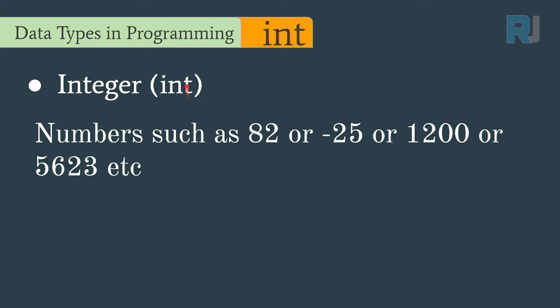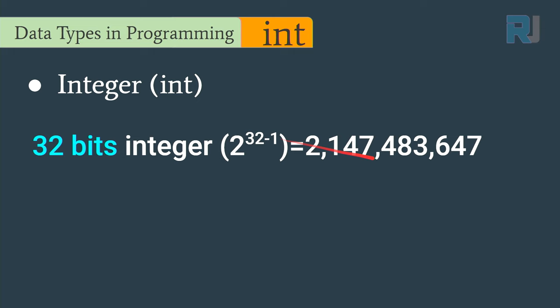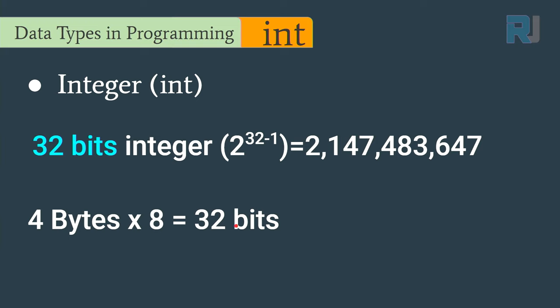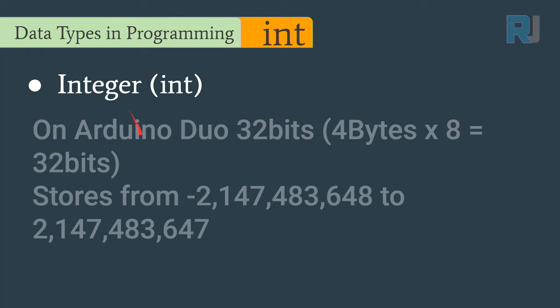The first data type we encounter and use a lot is integer. When we store a value like 85, -25, 1200, or 5623, these are integers and we define them with the keyword int. On ESP32 and Arduino Due, int is 32 bits, so it can hold values up to 2 to the power of 32 minus 1 — about 2 billion. Four bytes times 8 gives 32 bits.